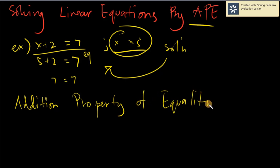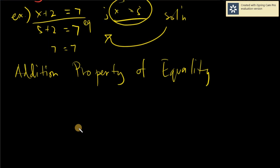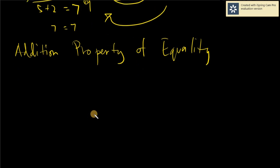Remember, we are dealing with equal signs here. When we talk about equal signs, it simply states that we need to apply all the properties of equality. The Addition Property of Equality means that whatever you will be adding on one side, you will also add on the right side.